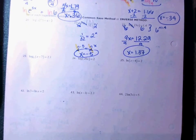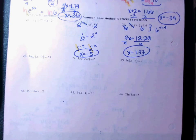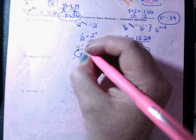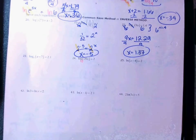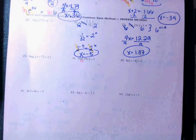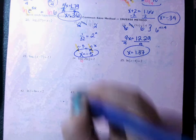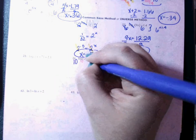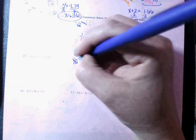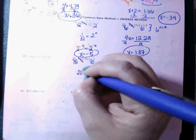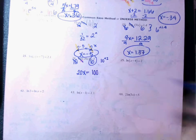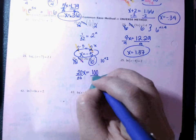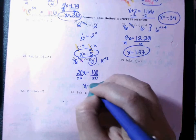Let's do number 24. Notice that the base is not listed — it only says log. Whenever the base is left off, remember that means it's base 10. So if number 24 is log base 10, the only way to cancel that out is to raise both sides to a power of 10. Ten and log-10 cancel, so 20x comes down, and 10 to the 2 — or 10 squared — is 100. Then divide by 20 on both sides and x equals 5.